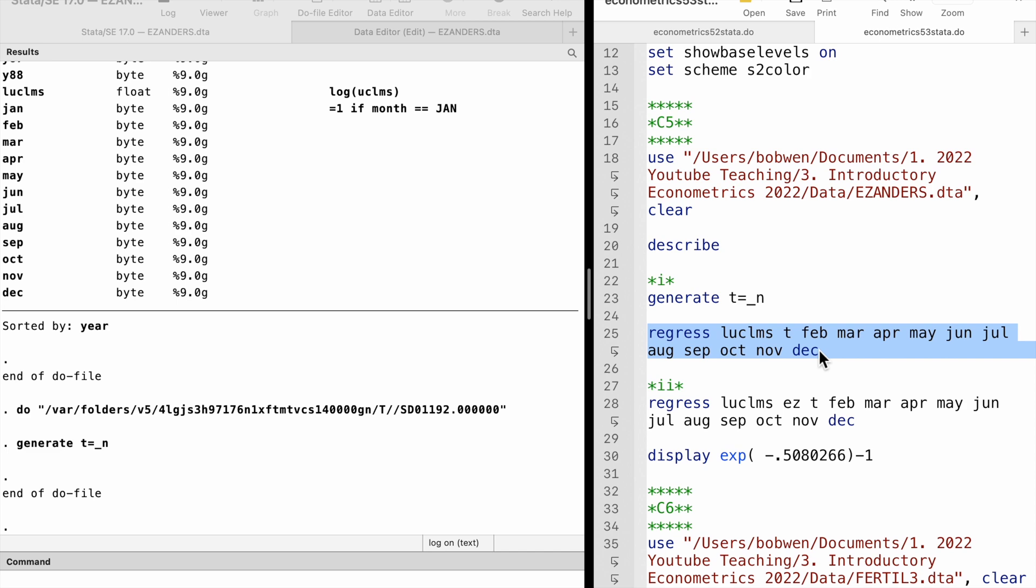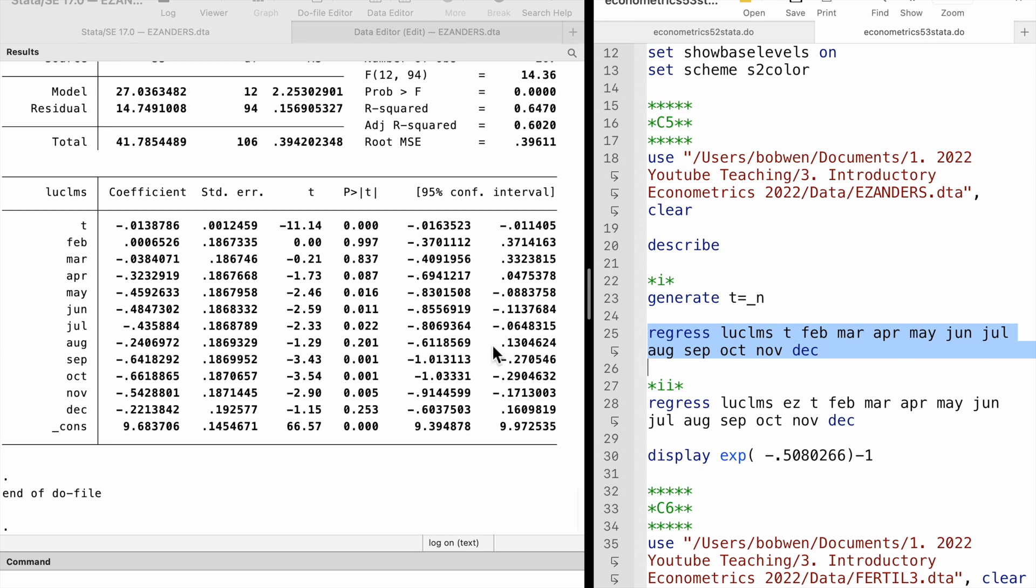The coefficient on the time trend is minus 0.014. It is statistically significant at the 1% level. It implies that the unemployment claims decrease by 1.4% per month on average over time.